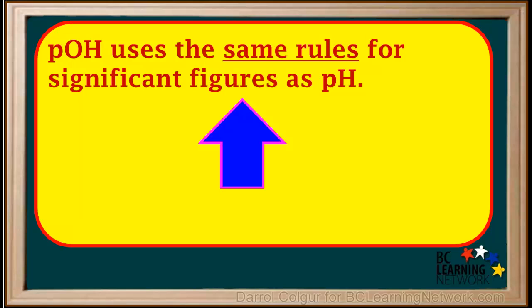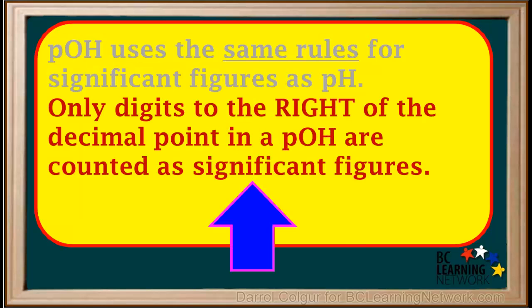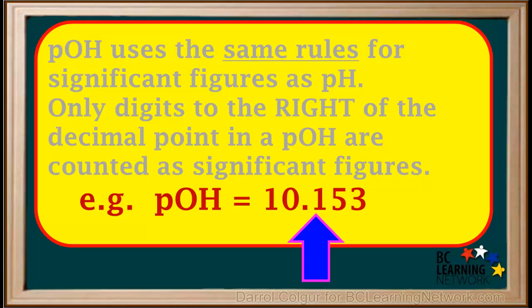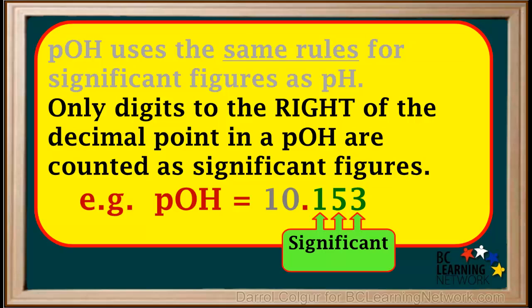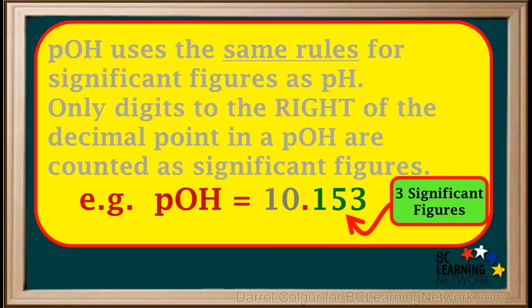pOH uses the same rules for significant figures as pH. Only digits to the right of the decimal point in a pOH are counted as significant figures. For example, let's say the pOH of a solution is 10.153. The 1 and the 0 in the grey-coloured 10 are both on the left side of the decimal place, so they are not significant figures. But the green-coloured 1, along with the 5 and the 3, are all on the right side of the decimal place, so they are significant figures. So a pOH of 10.153 has three significant figures.